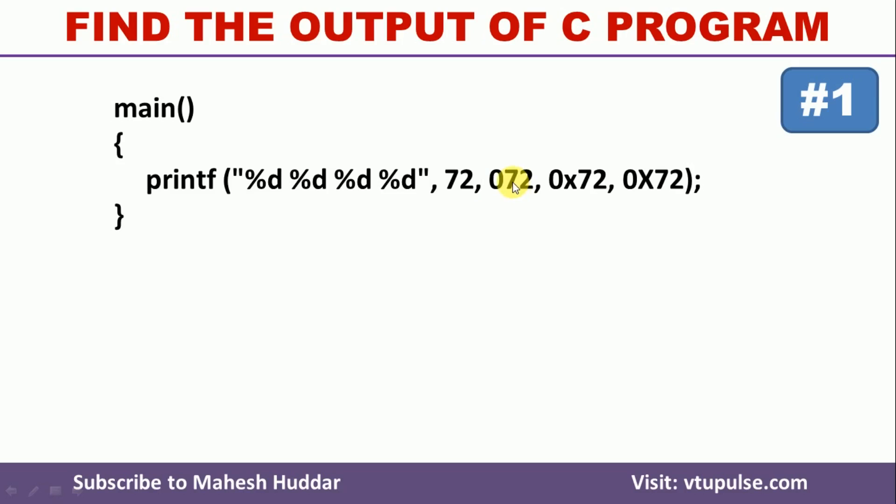If a particular number is preceded by zero, it is an octal number. If a number is preceded by zero small x or zero capital X, it is a hexadecimal number. If it is not preceded by anything, it is a normal decimal number.